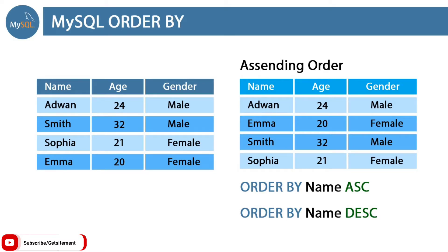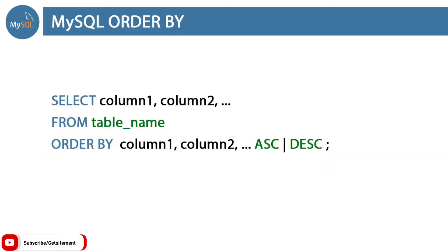Let's see how to use the ORDER BY command with SELECT. First type the SELECT command, then provide the column names — if you want all columns, type star. Then use the FROM keyword and provide the table name, followed by the ORDER BY keyword and the column name you want to order by. You can order multiple columns by separating them with commas and specifying ASC or DESC. Ascending order is the default — if you use ORDER BY without specifying, it runs in ascending order.